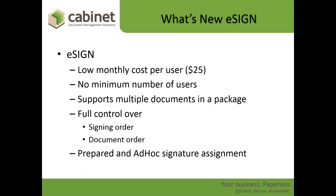Next, I'm going to talk about eSign. eSign is kind of the second release of our eSign and we've made some significant changes based on a lot of feedback from the initial release. We've reinvented the whole eSign capability. First of all, it's a low monthly cost — $25 per month per user — with a 12-month commitment but monthly payments. There's no minimum number of users, so if your organization has 50 people but only three will be responsible for sending out items for signature, you would only need to sign up three users.